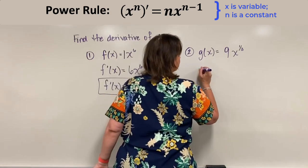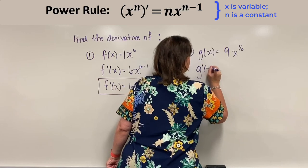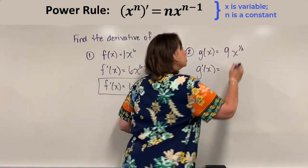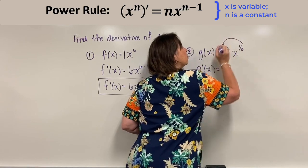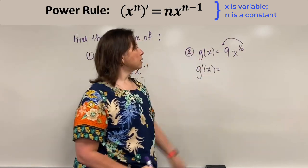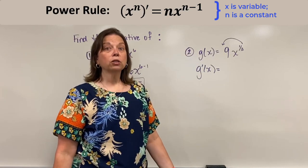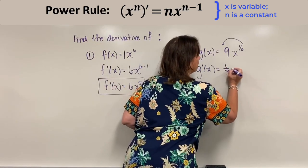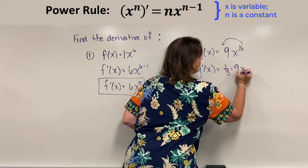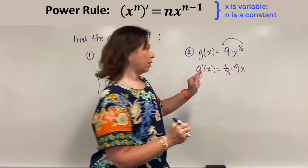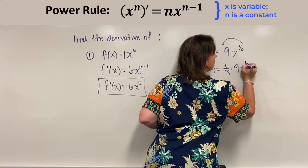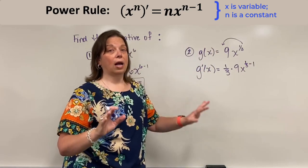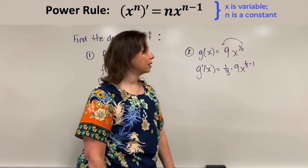So according to the power rule, we will find the derivative of this function by taking this power — even though it's a 1 third — out in front of the function and multiplying by the current 9 that's already there. So I have 1 third times the 9x to the new power, which is formed by taking 1 third and subtracting 1. Always subtracting 1, no matter what power you started with.